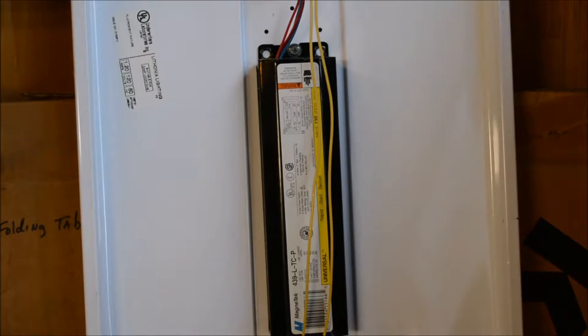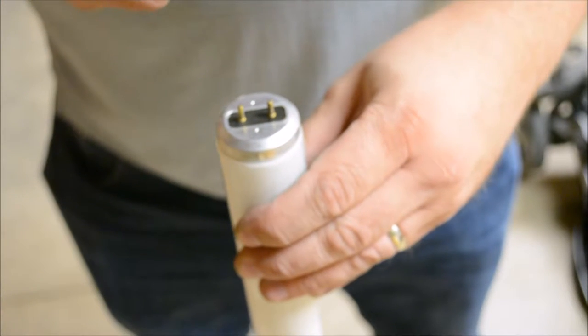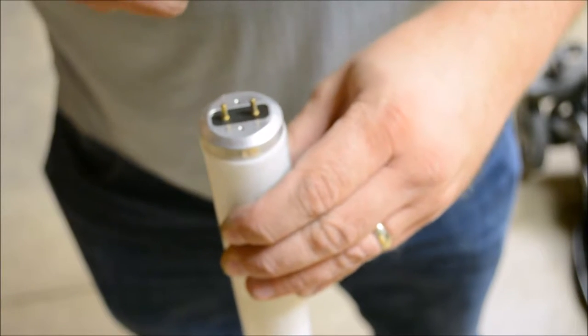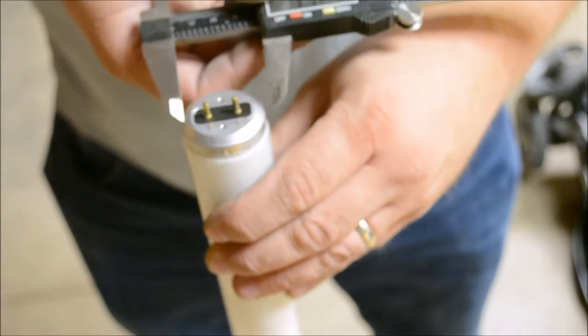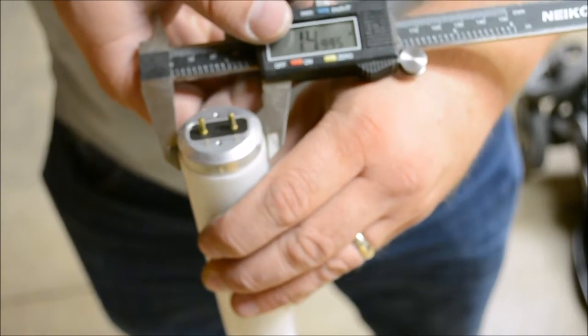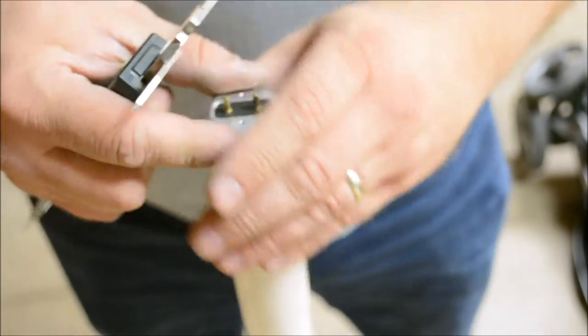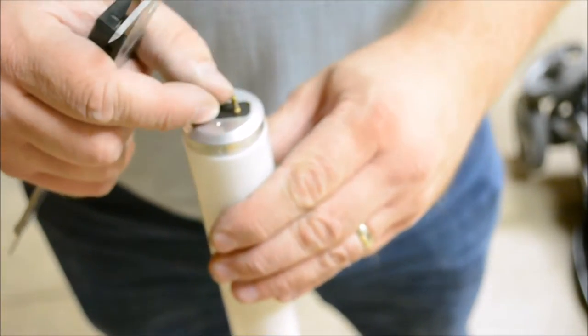The other two standards that you'll more likely come across are T8 and T5. A T12 means that it is 12 eighths of an inch which is roughly one and a half. A T8 would be an inch wide and a T5 would be nearly a half.